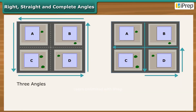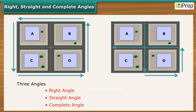While jogging, Rajiv makes three different angles. They are right angle, straight angle, complete angle. Let us look at each angle in detail.